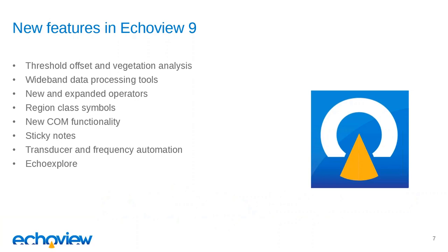Today we're going to look at the threshold offset and vegetation analysis export. We'll look at some tools for wideband data processing. We'll explore some new and expanded operators and also region class symbols. We'll have a quick demonstration of some new COM functionality. We'll see sticky notes in action, how transducer and frequency automation works, and finally we'll look at our new product, ECOExplore.